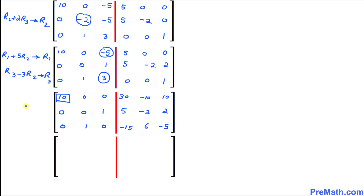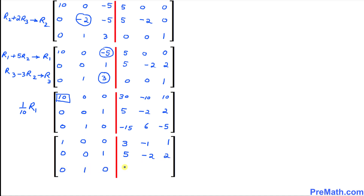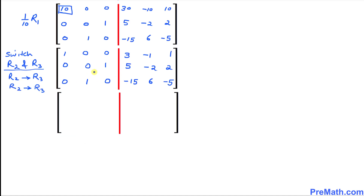Now in the first row we have a 10 and we want to make it 1, so we multiply the first row by 1/10. Dividing by 10, that row becomes 1, 0, 0, and on the right side 3, negative 1, 1. The rest stays the same: 0, 0, 1, and 5, negative 2, 2; and 0, 1, 0, and negative 15, 6, negative 5.